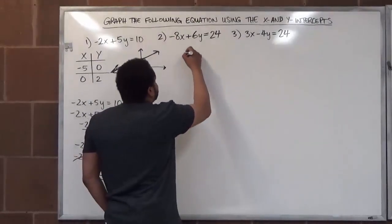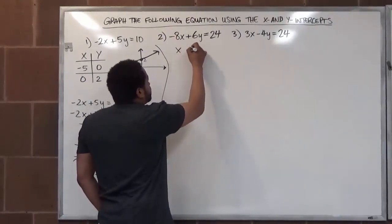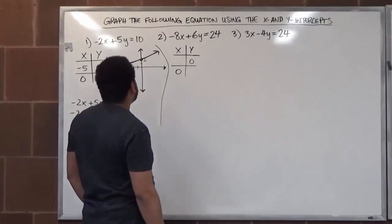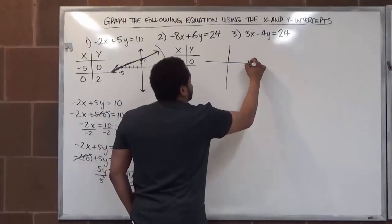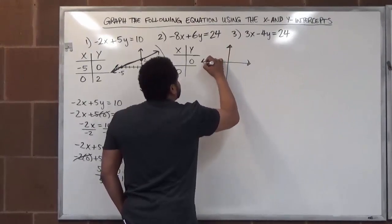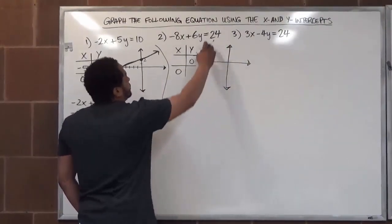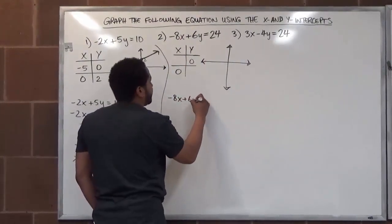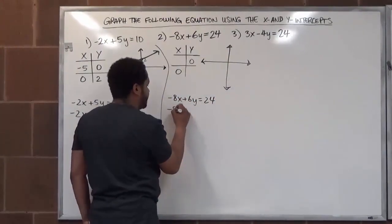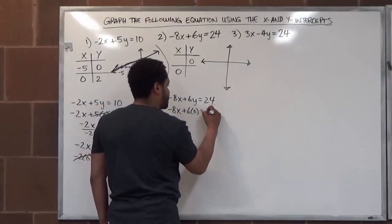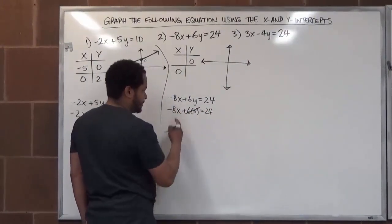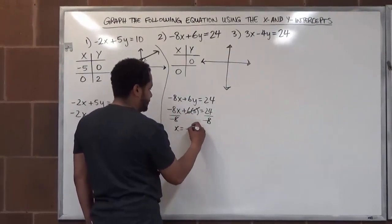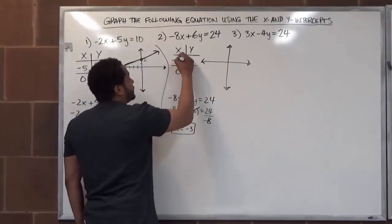Let's go to problem number two. We set up our x and y intercept table again with zero for y and zero for x. We begin by substituting our y value of zero: we have negative eight x plus six times zero equals twenty-four. The six goes away, and we're left with negative eight x equals twenty-four. Dividing both sides by negative eight gives us x equals negative three. That's our x intercept: negative three, zero.